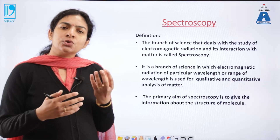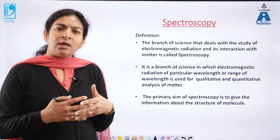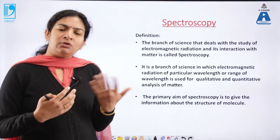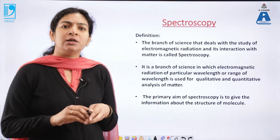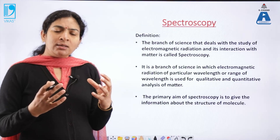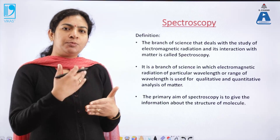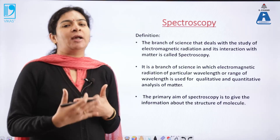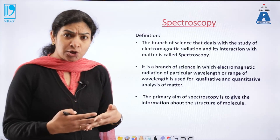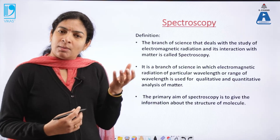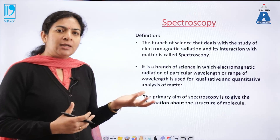These molecules are so small that they cannot be seen by the naked eye. But we have such techniques where we can derive the information about their structure using the concept that matter interacts with electromagnetic radiation. So when electromagnetic radiation falls on any substance, it will either be absorbed, emitted, or scattered by that matter. Depending on the absorption and the emission of the electromagnetic radiation, we get to know information about the structure of these atoms and molecules, and this is what we study in spectroscopy.